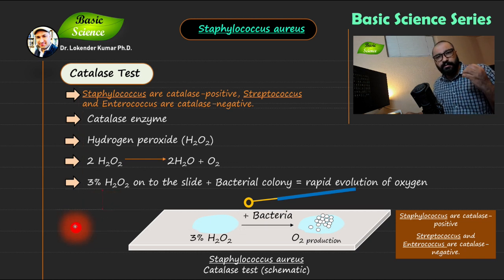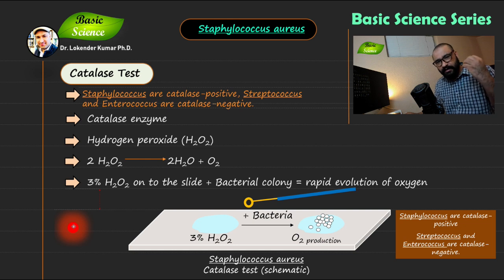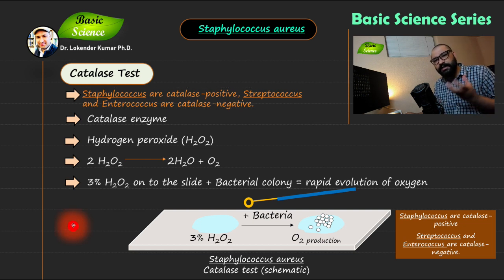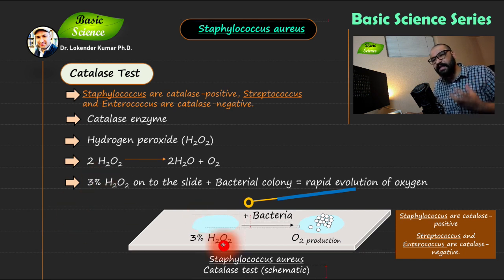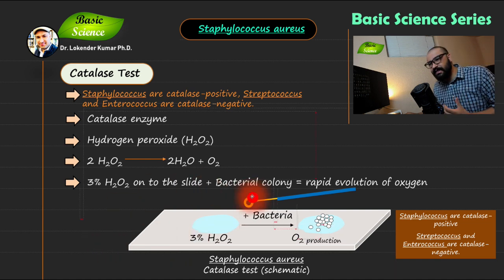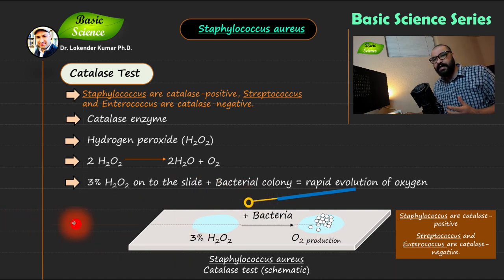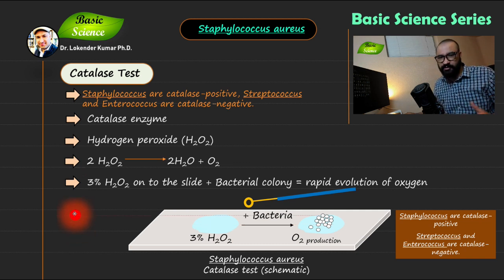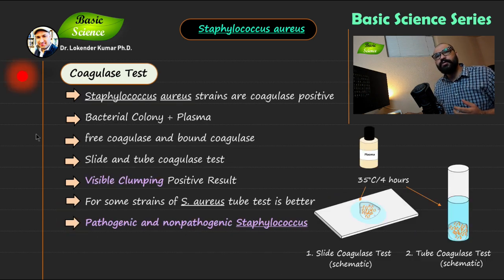Remember that you should have a fresh culture — inoculate the organism the previous day so that you have an overnight grown, freshly grown culture of the bacteria, then perform this test. If you have Staphylococcus aureus, you will immediately see bubble formation, and for any Staphylococcus species you will see bubble formation, indicating a catalase positive test.